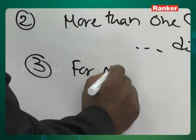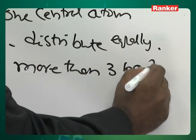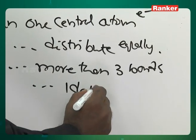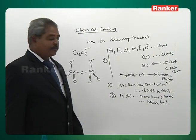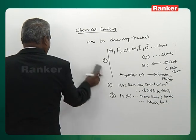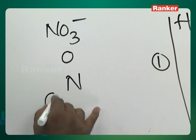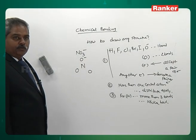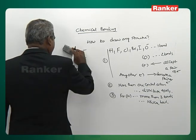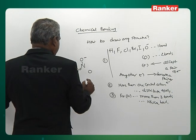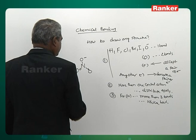Third principle: for nitrogen, if you have more than three bonds, one of the bonds should be a dative bond. Example: NO3⁻ — one nitrogen, three oxygens, one of them is O⁻. Oxygen forms two bonds, O⁻ forms one bond. The quota of three bonds for nitrogen is over, so the remaining bond must be a coordinate covalent bond.